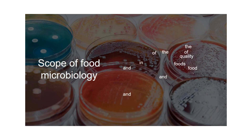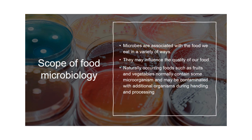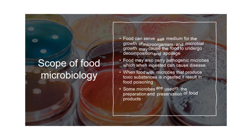Microbes are associated with the food we eat in a variety of ways. They may influence the quality of our food. Naturally occurring foods such as fruits and vegetables normally contain some microorganisms and may be contaminated with additional organisms during handling and processing. Food can serve as a medium for the growth of microorganisms, and microbial growth may cause the food to undergo decomposition and spoilage. Food may also carry pathogenic microbes which when ingested can cause disease. When food with microbes that produce toxic substances is ingested, it results in food poisoning.